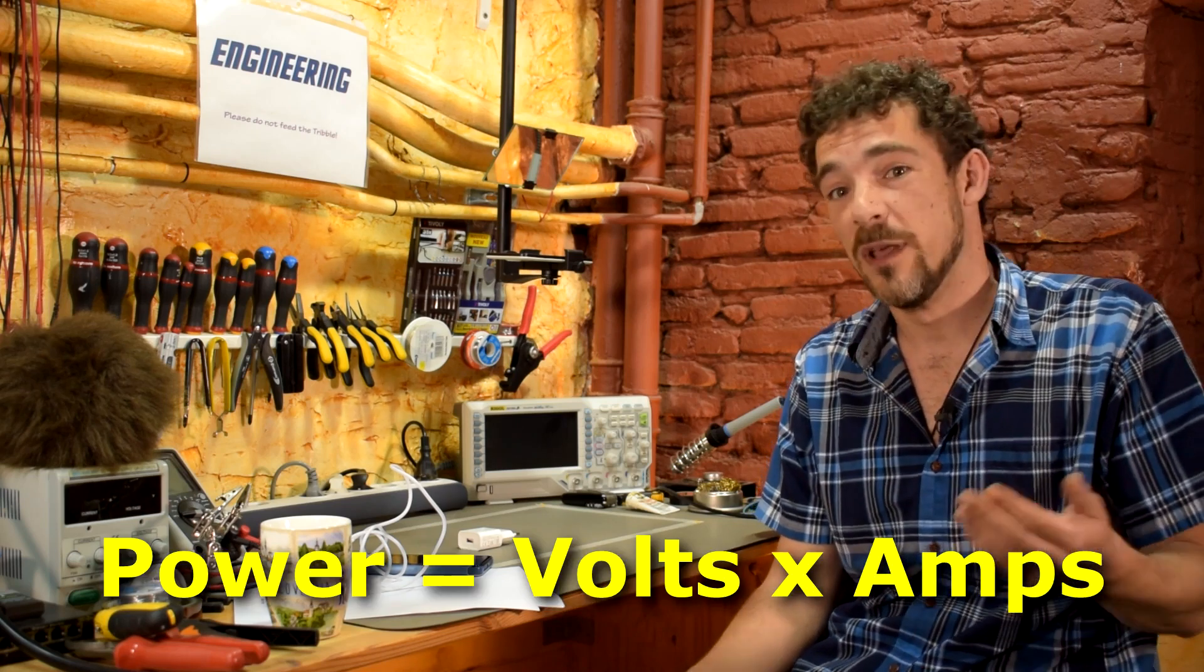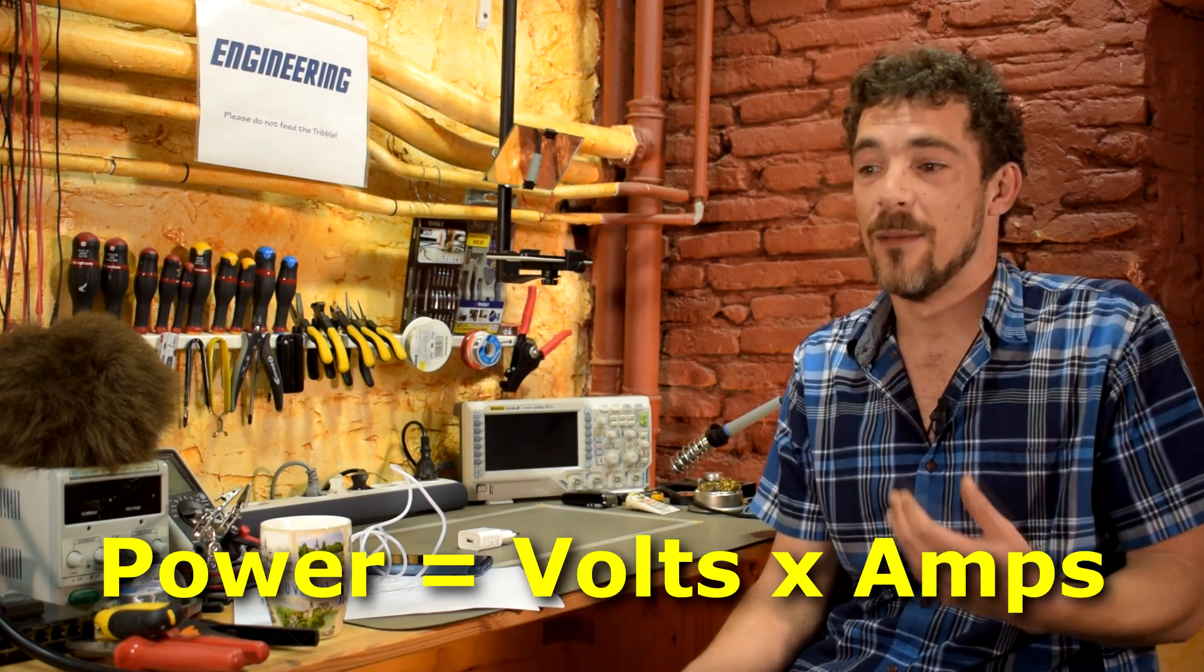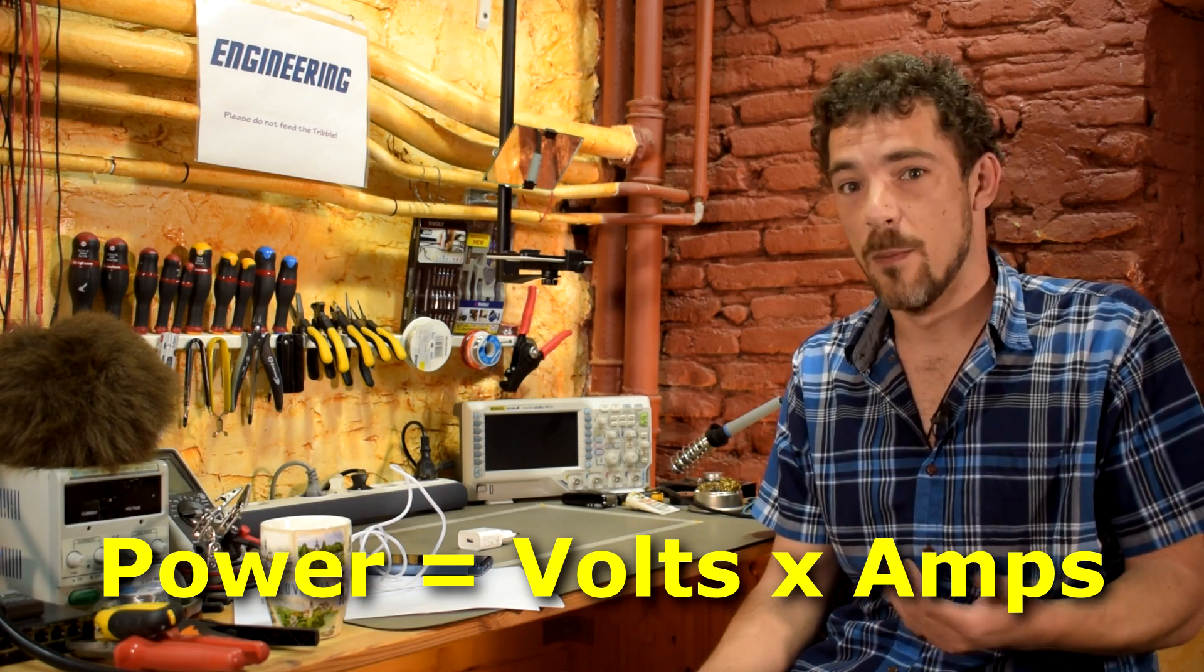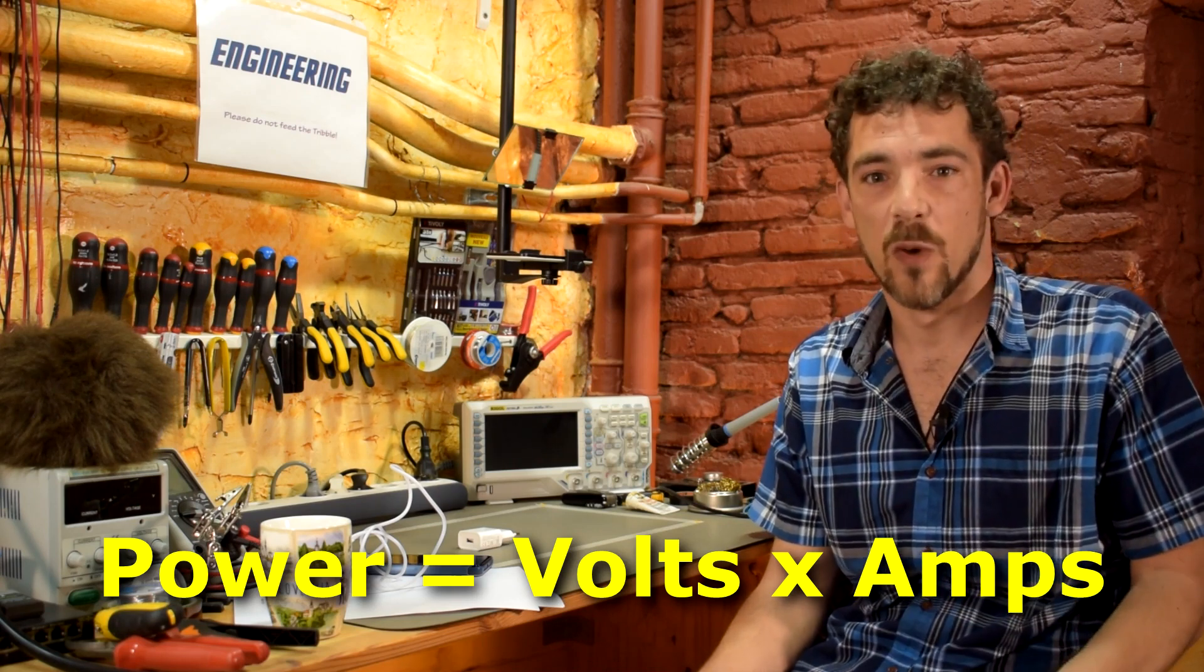Because as we know, USB supplies 5 volts and USB 3.0 is typically 1 amp, but it's actually 0.9 amps. And since power equals voltage times current, that means that a normal USB 3 port can supply 4.5 watts of power.